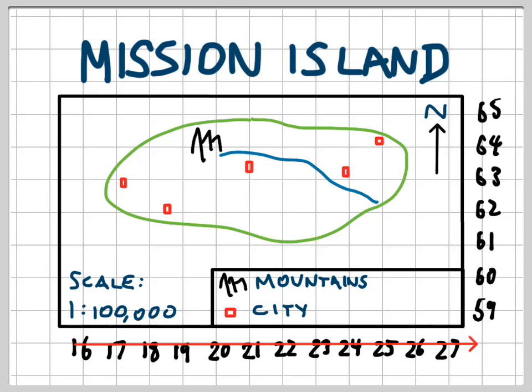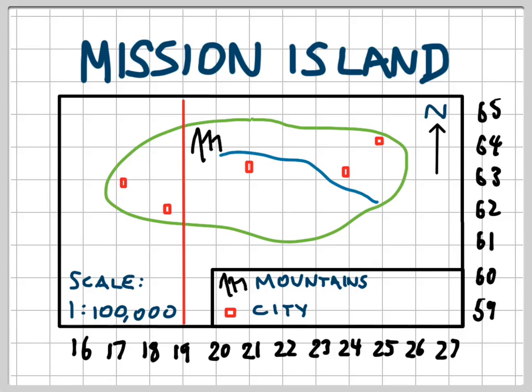The numbers which are up the side — they could be on the left or the right-hand side, they're on the right-hand side in this case — they get larger as you move towards the north. So these numbers are called Northings. We have Eastings along the bottom getting larger as we go towards the east, and Northings getting larger as we move north. Each of the numbers refers to one of the lines on the grid. The Easting of 19 refers to the red vertical line, and the Northing of 62 refers to the horizontal red line.